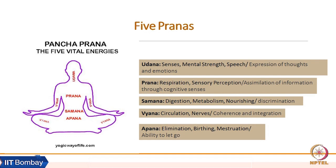All these pranas are supposed to have different physical and emotional functions. Udana prana is related to mental strength and speech, and is located near the neck, head, and face region. Activities going on in this region are governed by udana prana — it is related to the senses, mental strength, and speech at the physical level. At the emotional level, our ability to express thoughts and emotions is connected to udana prana.